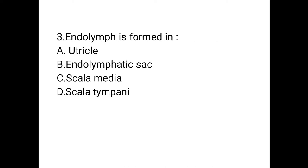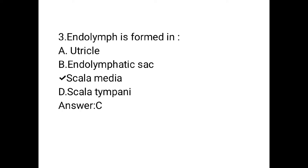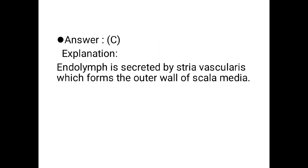Next question: endolymph is formed in — Option A: utricle. Option B: endolymphatic sac. Option C: scala media. Option D: scala tympani. Option C, scala media, is the correct answer. Explanation: endolymph is secreted by the stria vascularis, which forms the outer wall of the scala media.